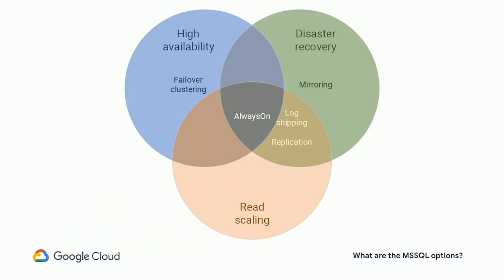You can also do read scaling with log shipping, but I probably wouldn't use it for that. If you're trying to do transactional read scaling, log shipping isn't really a good fit because your clients are going to be constantly disconnected when restore operations are happening, and there's also going to be quite a bit of latency. For transactional read scaling, you're probably better off with something like replication. And then in the middle of the Venn diagram, you have Always On, which can actually do all three things — high availability, disaster recovery, and read scaling.